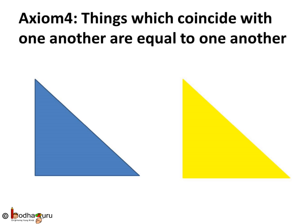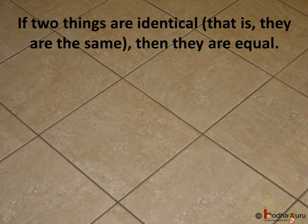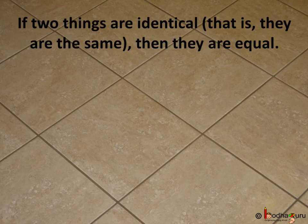Things which coincide with one another are equal to one another. At times you must have put one tile over another tile just to see whether they are same or not. So the axiom seems to say that if two things are identical, that is they are the same, then they are equal.